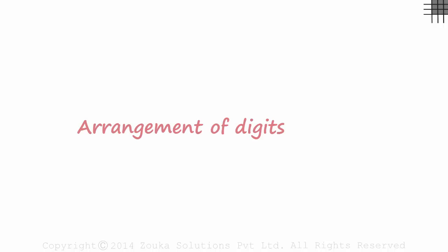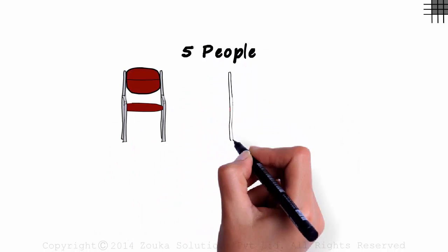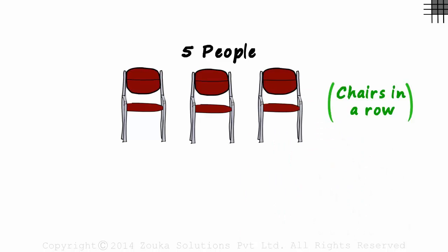Now that we have covered arrangement of digits, let's try arranging people. Say we have five people and we have just three chairs. The chairs are placed in a row or in a straight line.